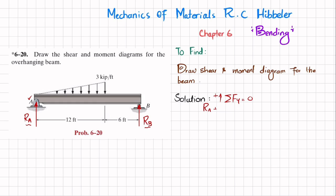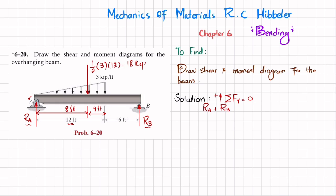The triangular load will be converted into a point load. Its magnitude is (1/2) × 3 kips/ft × 12 ft = 18 kips. This resultant acts at a distance of L/3 = 12/3 = 4 feet from the right end (the zero end), leaving 8 feet from the left end A. So: R_A + R_B − 18 = 0, giving equation (1): R_A + R_B = 18.